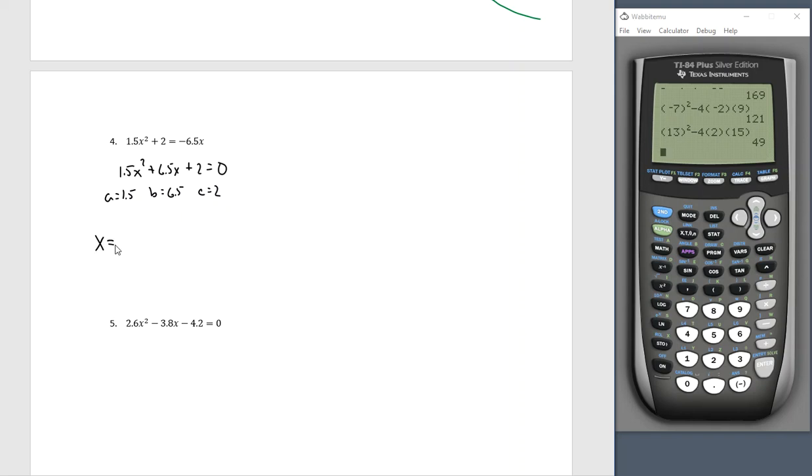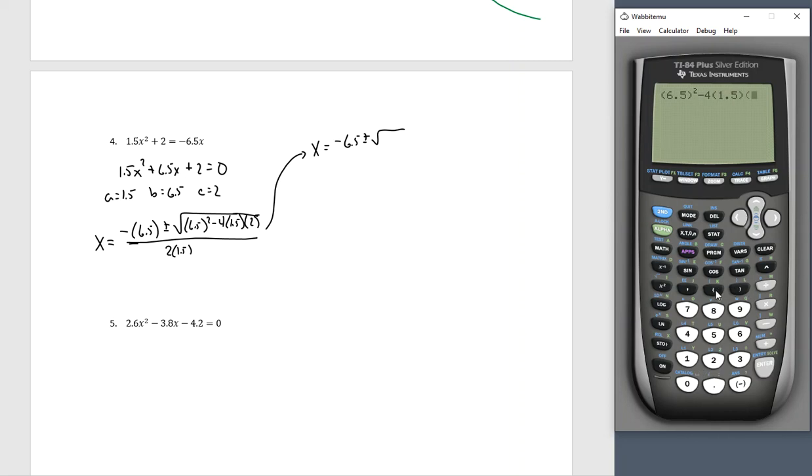We will have x equals negative 6.5 plus or minus square root of 6.5 all squared minus 4 times 1.5 times 2, all over 2 times 1.5. So x equals negative 6.5 plus or minus square root of 6.5 squared minus 4 times 1.5 times 2, which is 30.25, all over 3.